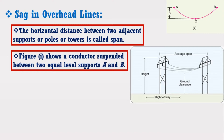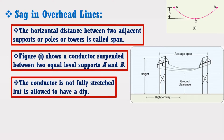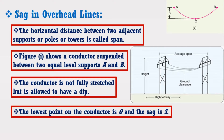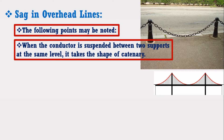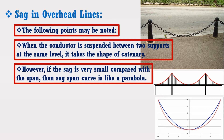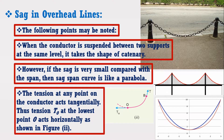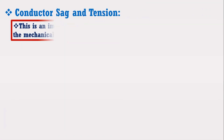Consider figure 1, which shows a conductor suspended between two equal level supports A and B. The conductor is not fully stretched but is allowed to have a dip. The lowest point on the conductor is O and the sag is S. When the conductor is suspended between two supports at the same level, it takes the shape of a catenary as shown in the figure. However, if the sag is very small compared with the span, then the sag-span curve is like a parabola. The catenary shape is a U-shaped curve whereas the parabola curve is a little bit narrower. The tension at any point on the conductor acts tangentially; thus, tension T0 at the lowest point O acts horizontally as shown in figure 2. This is an important consideration in the mechanical design of overhead lines.